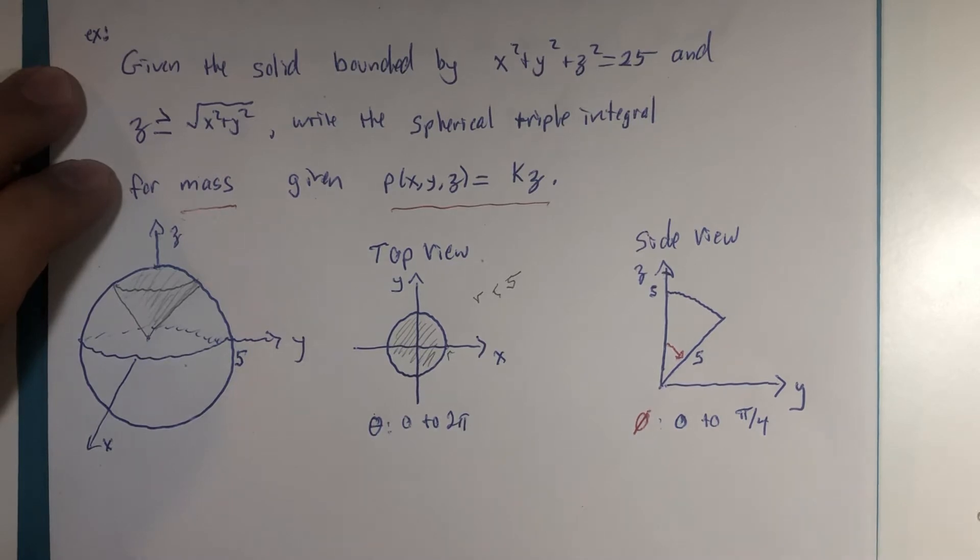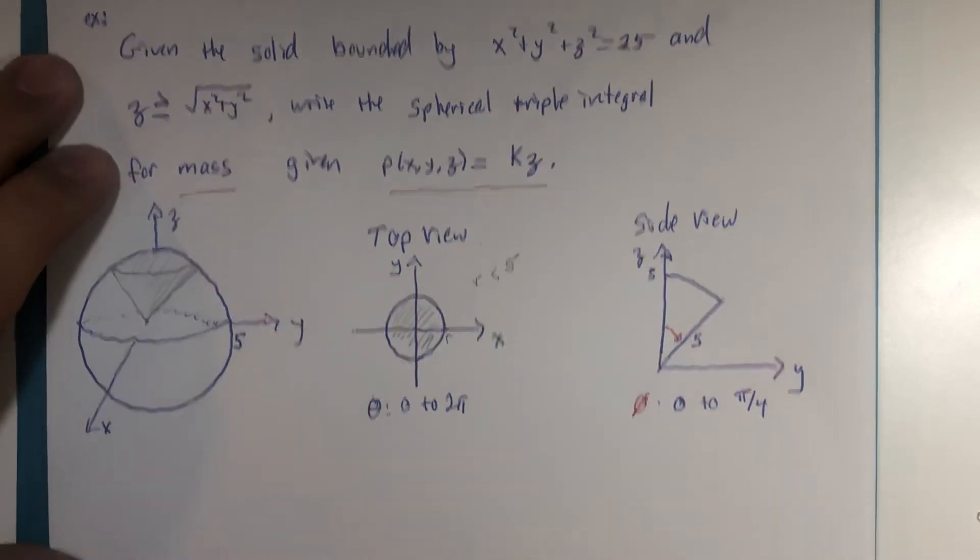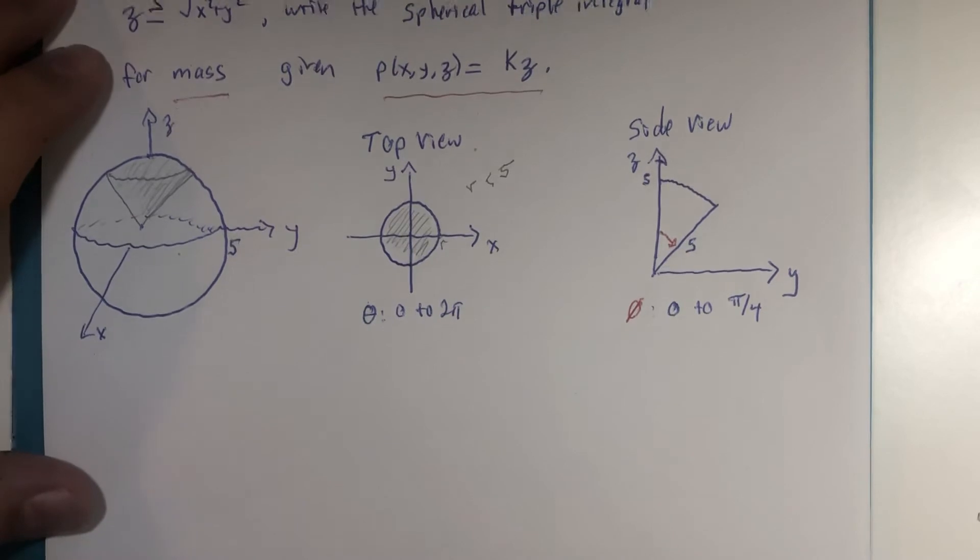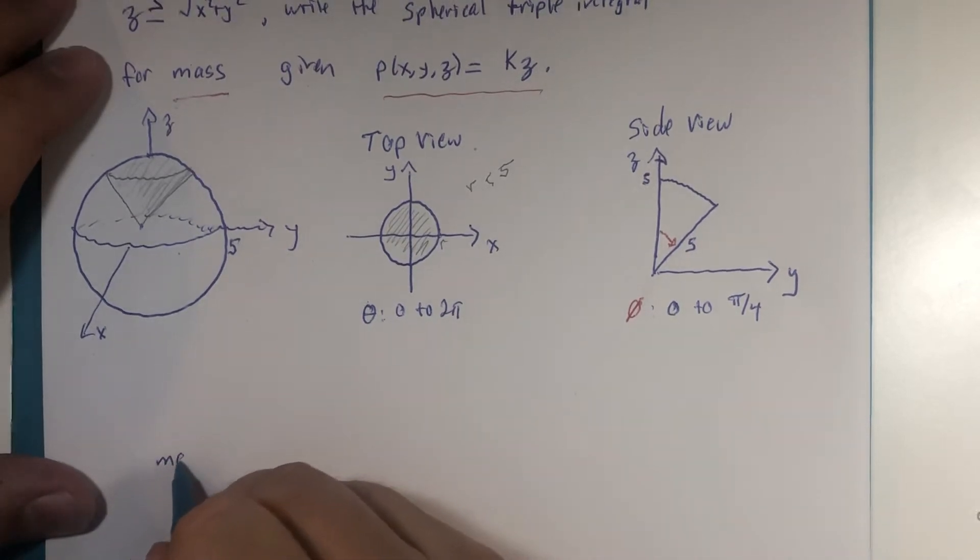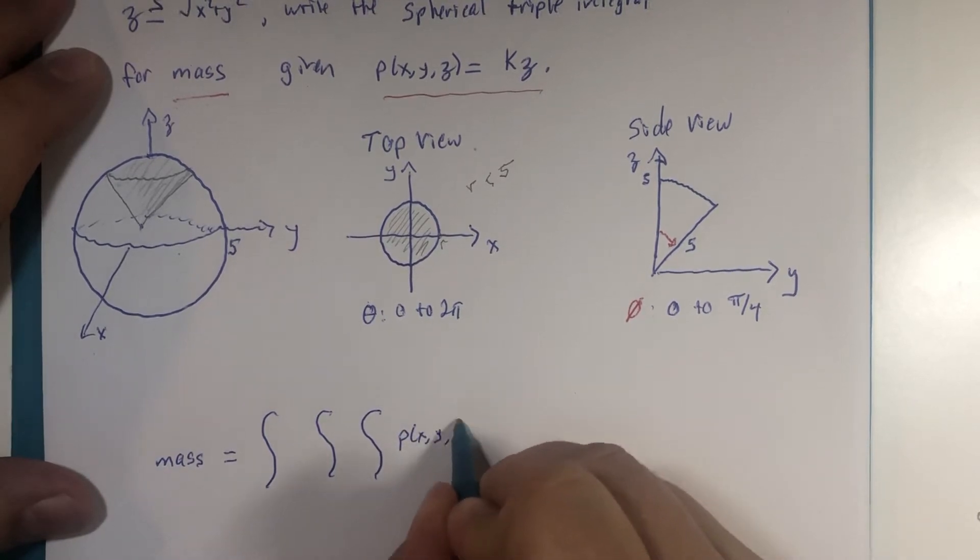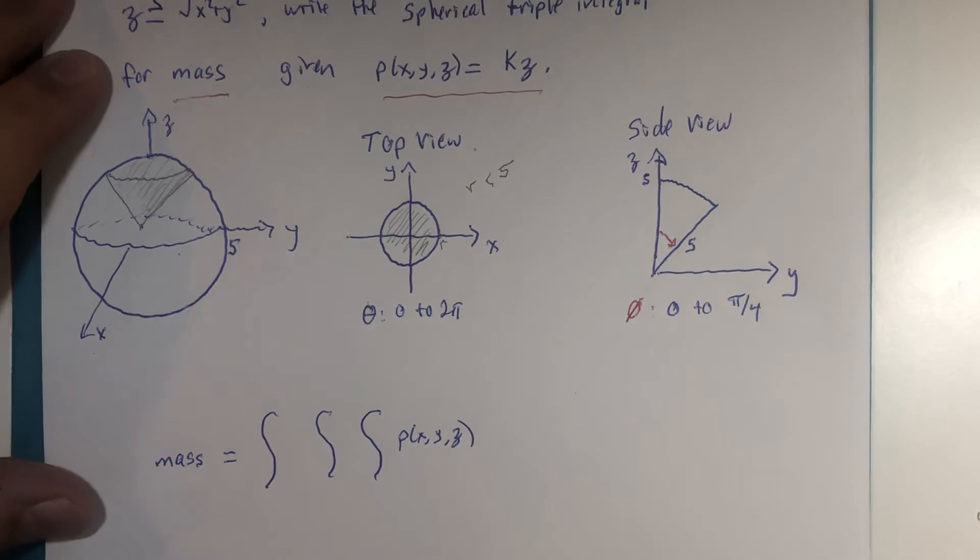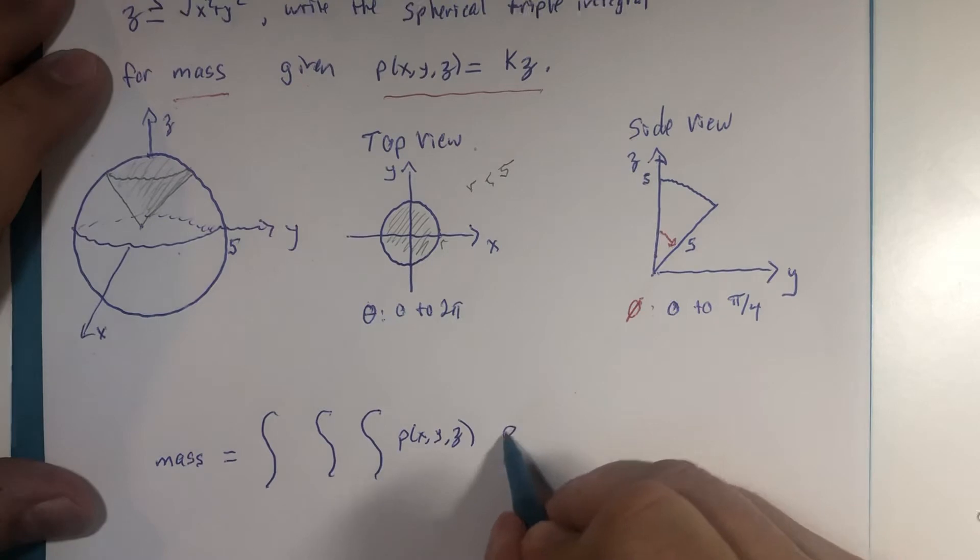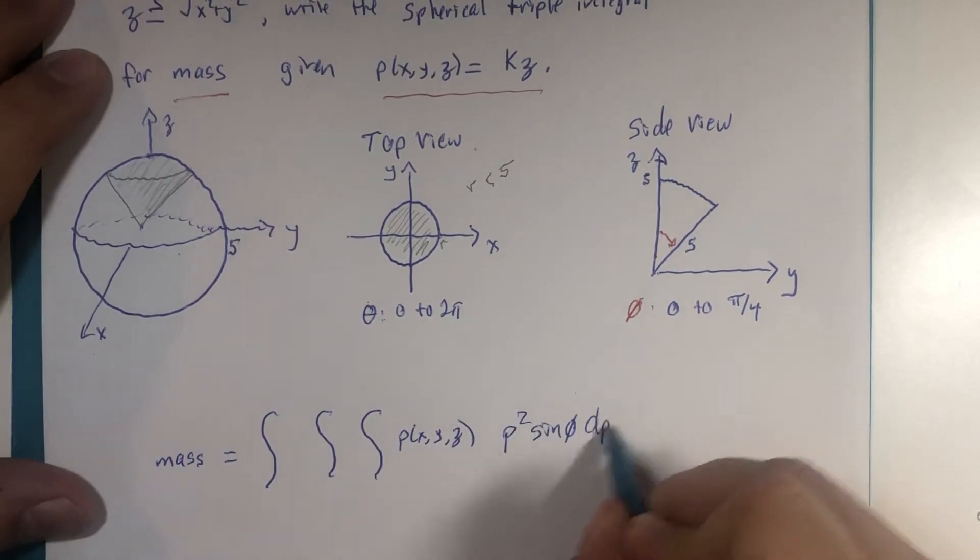The other thing I'm going to need, if you recall, if I'm going to calculate the mass, when I set up my triple integration, I need my density function ρ(x,y,z), and then the volume component in spherical is ρ² sin(φ) dρ dφ dθ.